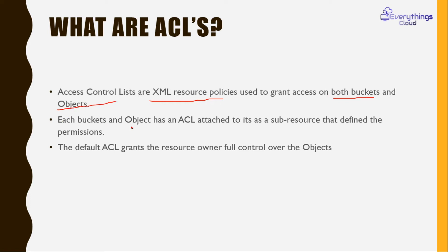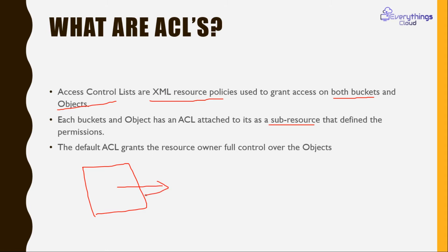Each bucket and object has an ACL attached, and it is also attached with the sub-resource. By default, once you create the bucket, everything is private — meaning it is not accessible in a public domain. The only one who has full permission to control the bucket is the owner. So the owner always has full permission.